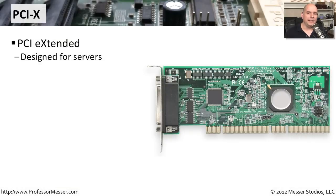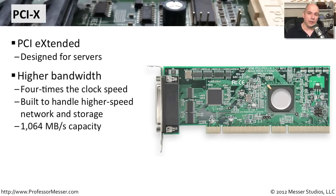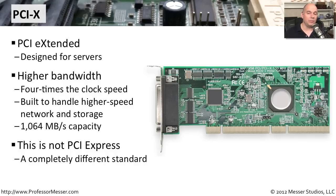One of the things we found with PCI is that as the years went on, it became much harder to get higher throughputs through those legacy interfaces. So we created an update to PCI called PCI-X, which stands for PCI Extended. We really created this for servers that needed a lot of throughput — they were able to get four times the clock speed, with the ability to plug in gigabit ethernet cards or high speed storage. The capacity of throughput went up to 1,064 megabytes per second. Keep in mind that PCI-X does not stand for PCI Express — that's a completely different format using a completely different method of communication. PCI-X stands for PCI Extended, which is simply an updated version of the PCI standard.